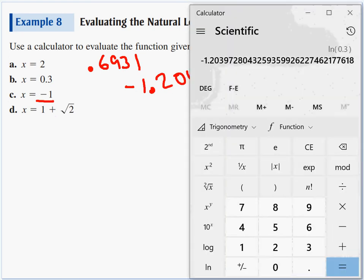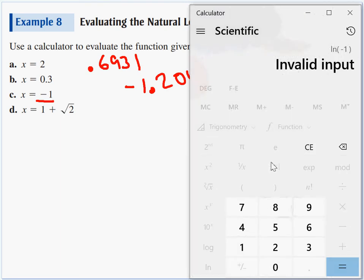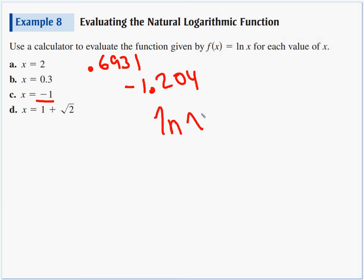Letter c, negative 1, make it negative, nat log, boom, invalid input. Remember, just like any other log, we can only log positive numbers. If we've got the log of x, our domain would be x must be greater than 0. Negative 1 is not greater than 0, so we get the error message for part c.